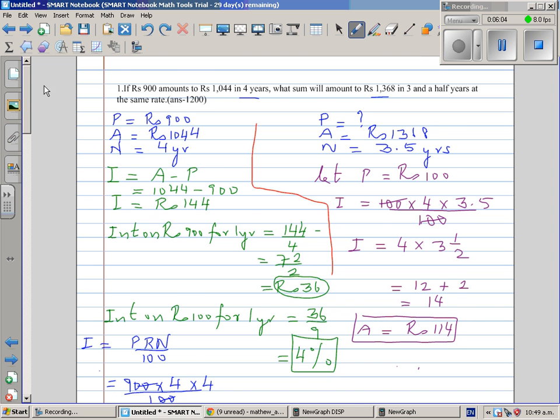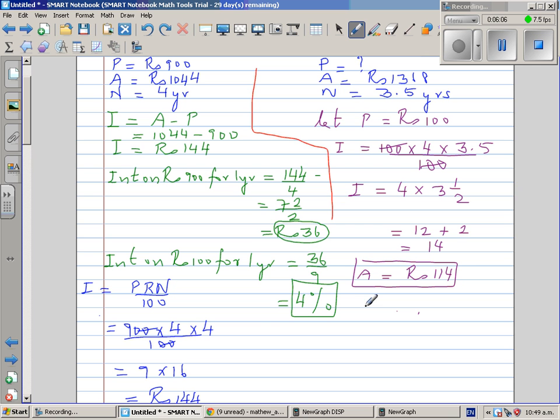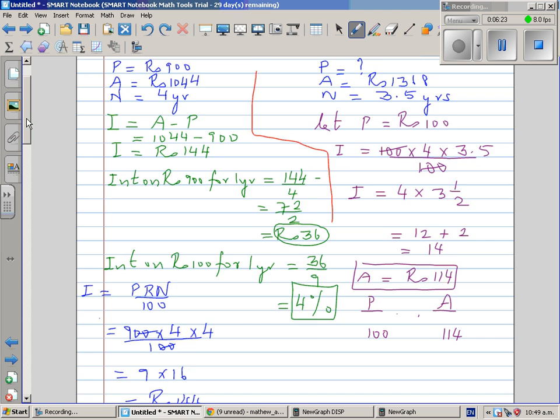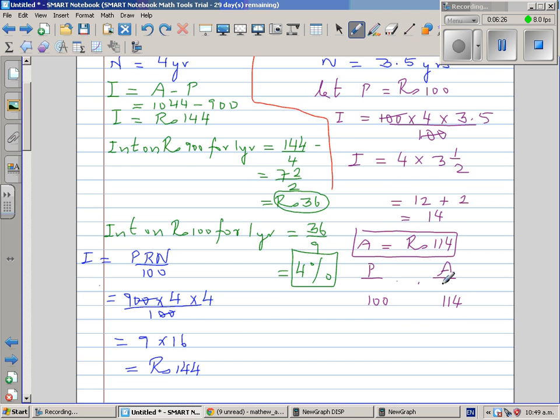So now we're going to use a simple proportion. Let's make two columns. Let's write principle and amount. So we know when principle was 100, it became at the rate of 4%, 114. But we know the amount that we have is 1368.